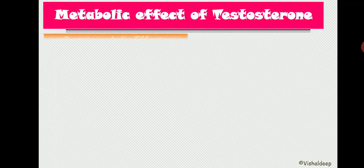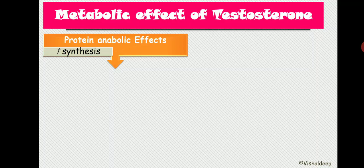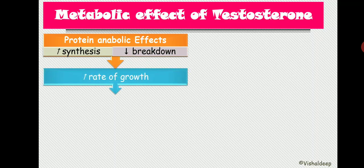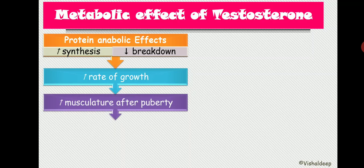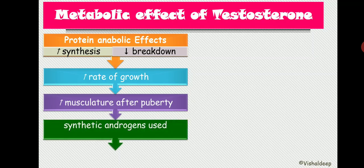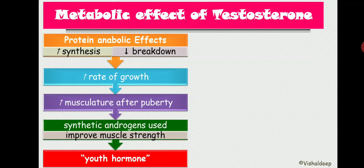Metabolic effects of testosterone include a protein anabolic effect — increased protein synthesis and decreased breakdown — leading to increased growth rate and musculature after puberty. Synthetic androgens can improve muscle strength, which is why athletes misuse them. Testosterone is also known as the 'youth hormone.'